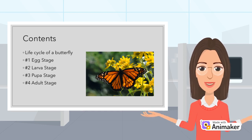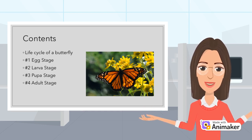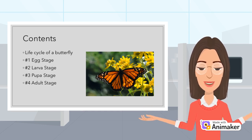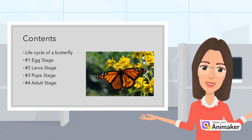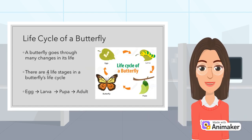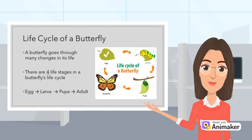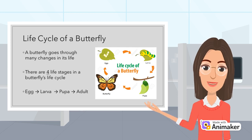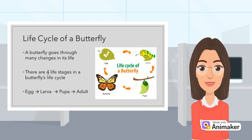Namely, the egg stage, the larva stage, the pupa stage, and finally the adult stage. A butterfly goes through many different changes in its life. It has a total of four life stages: the egg, larva, pupa, and adult stage.